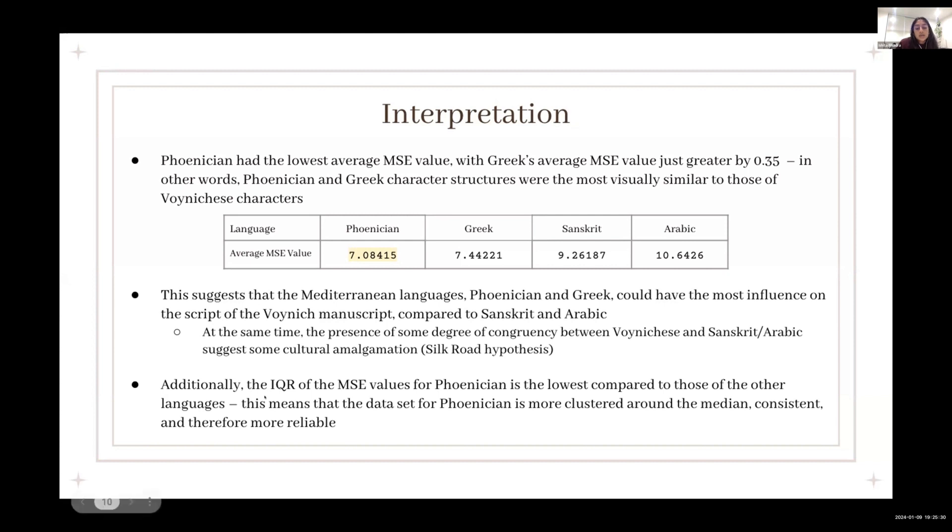Additionally, the interquartile range of the mean square error values for Phoenician was the lowest compared to those of the other languages, which means that the dataset for Phoenician was more clustered around the median and therefore more reliable and consistent.